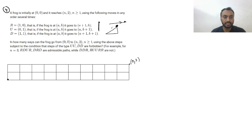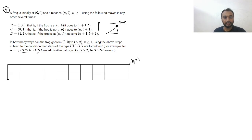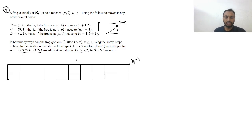This is subject to the condition that steps of the type UU and DD are forbidden — they cannot be consecutive. So for example, for n = 3, some paths are admissible but others are not because they have two D's or two U's together. There is no restriction on R.